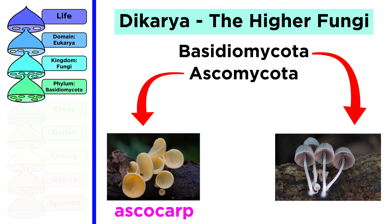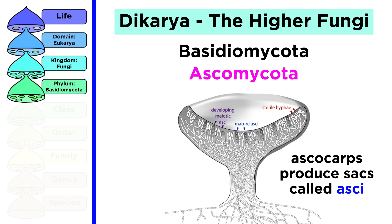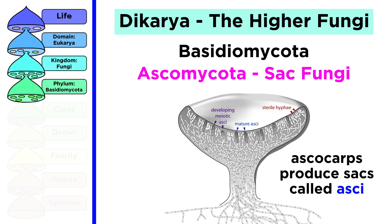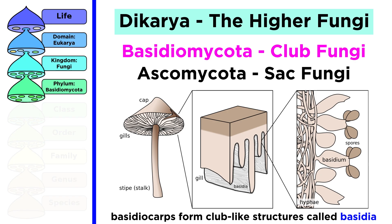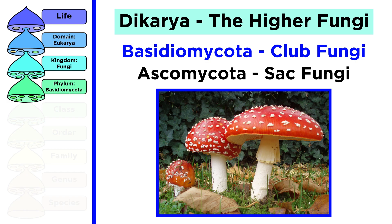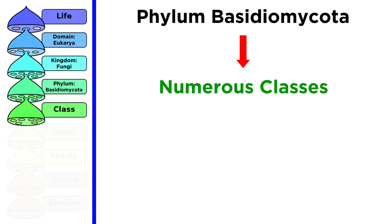The sporocarps from the phylum ascomycota are known as ascocarps, and from basidiomycota they are known as basidiocarps. The ascocarps produce sacs of spores called asci, and are therefore commonly known as sac fungi. The basidiocarps form club-like structures that produce spores called basidia, and are therefore commonly known as club fungi. The fly agaric is a club fungus, so we classify it further into the phylum basidiomycota.